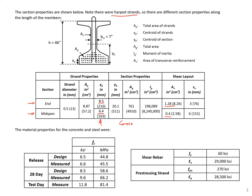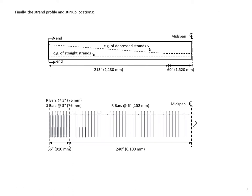I'll highlight throughout the problem what would change if we had a cast-in-place deck. We have our measured release strength, measured 28-day strength, and measured strength on the test day. We're working in KSI and inches, so we'll use the left column. We also have properties for our shear reinforcement and pre-stressing strands, which we'll need throughout the example.